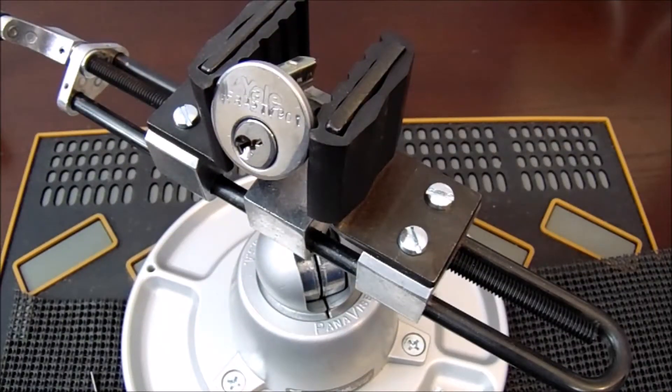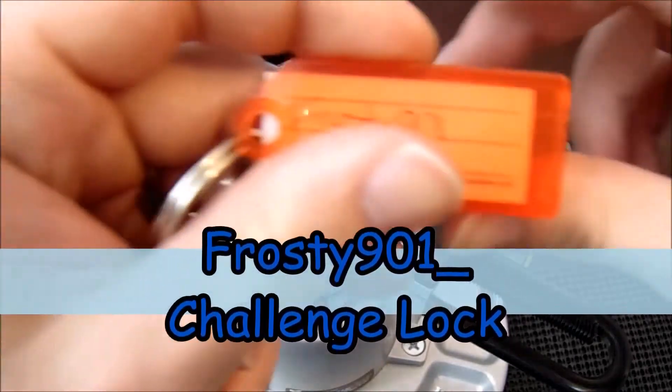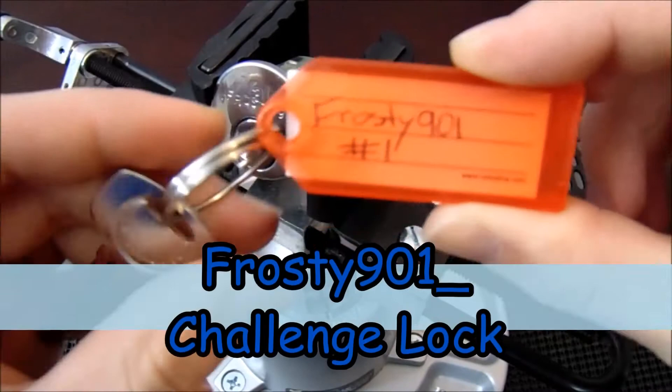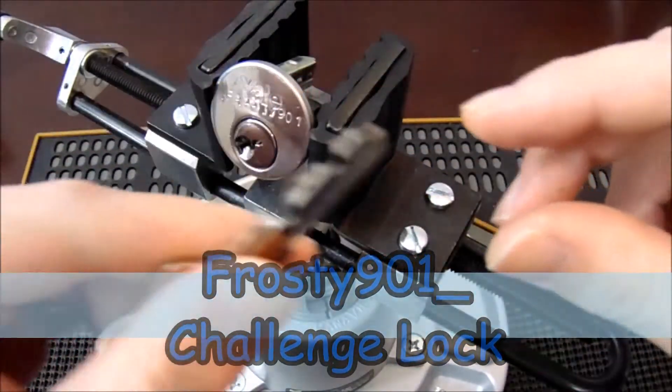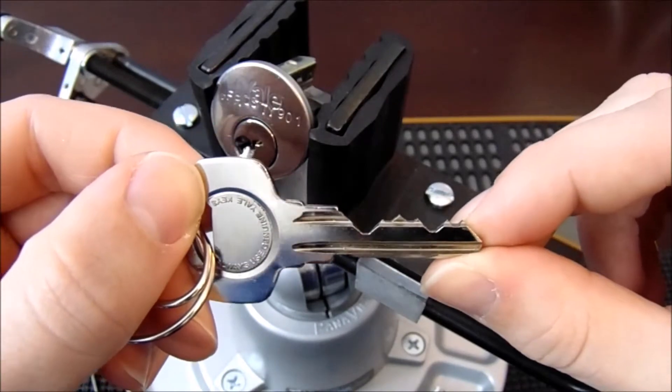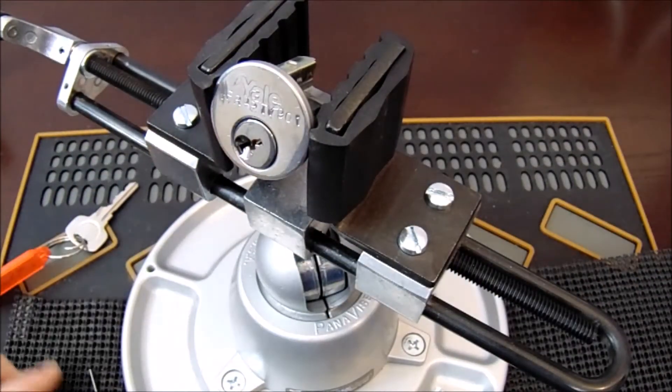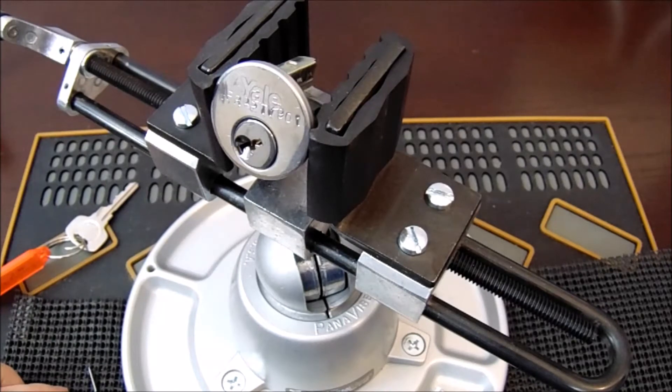This is the Helpful Lock Picker. In the video I have for you today is the Frosty901 challenge lock. This is the first challenge lock that he's ever made and I was happy to work on it. It's a Yale style lock with some pretty decent bidding on it. This lock has given me a good amount of trouble and I've never been able to open it in any time frame that'd be appropriate for making a video.